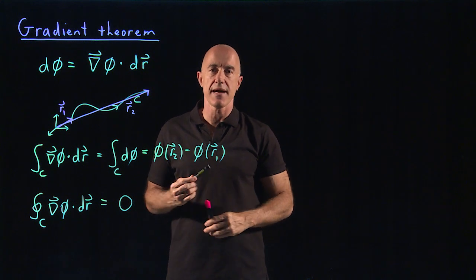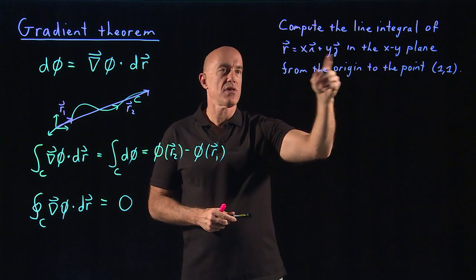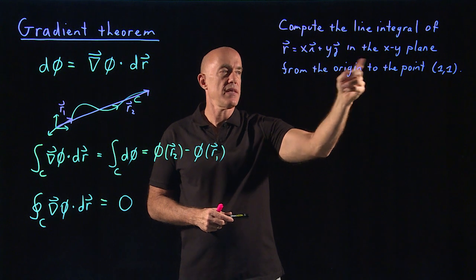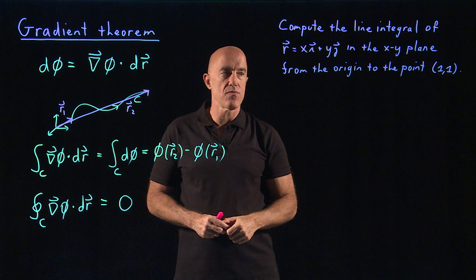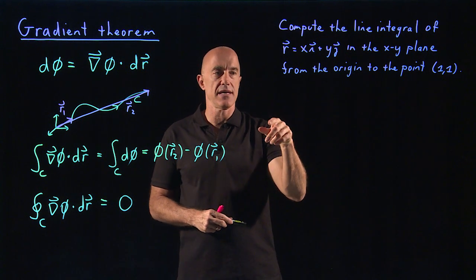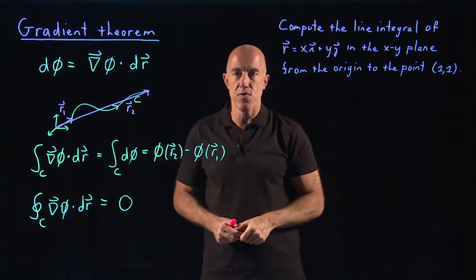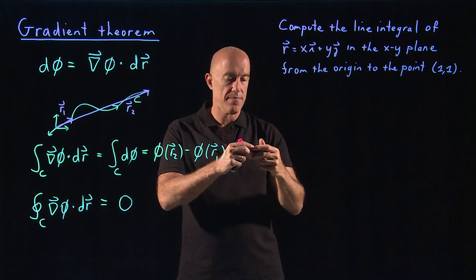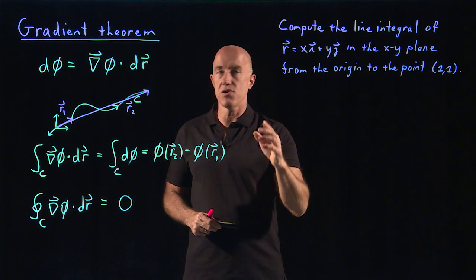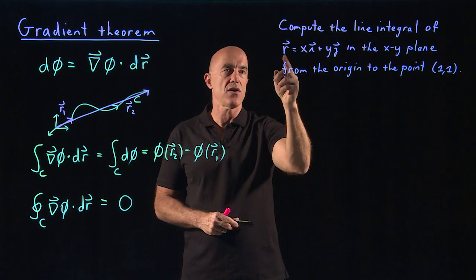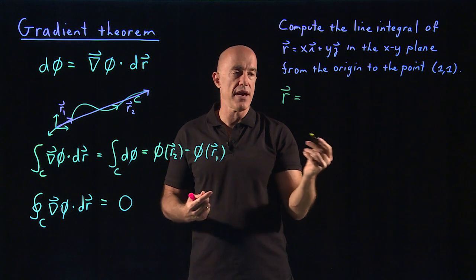Let's try and work an example. The problem I want to solve using the gradient theorem is to compute the line integral of the position vector r equals xi plus yj in the xy plane from the origin to the point (1,1). This is exactly the same problem we solved when we did the example for line integrals — I did two paths, along the x-axis and then in the direction of the y-axis, and then the direct path, and we got the same answer both ways. It turns out that's because it's independent of path. So how do we apply the gradient theorem? We're doing an integral of r dot dr, so we need to write r in terms of the gradient of some function.